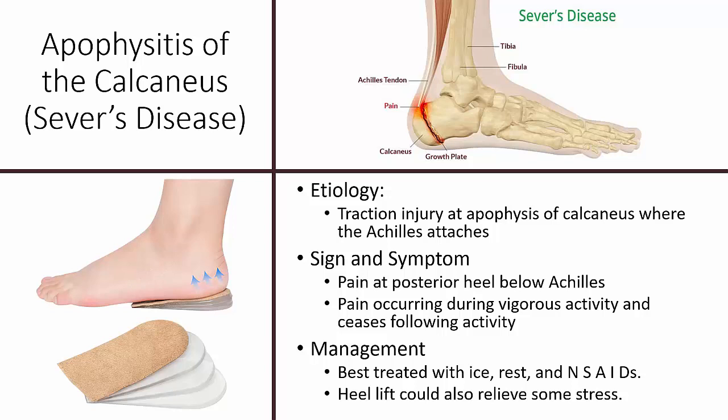Signs and symptoms include pain on the posterior heel below the Achilles tendon attachment in children and adolescent athletes. This pain occurs during vigorous activity and ceases following that activity, so pain decreases with rest. Management is best treated with ice, rest, and NSAIDs. A heel lift placed in the shoe can also relieve some of the stress placed on the calcaneus from the pulling Achilles tendon.